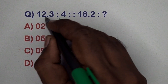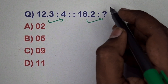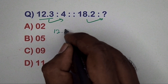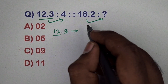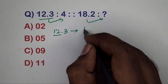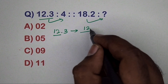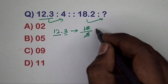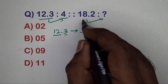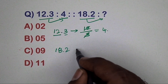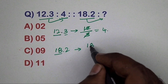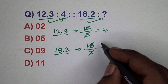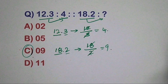Next question: 12.3 related to 4, 18.2 related to which number? Take 12.3 — before the decimal is 12, and the decimal part is 3, so 12 divided by 3 gives 4. Same way, take 18.2 — 18 divided by 2 gives 9. So 9 is the correct answer.